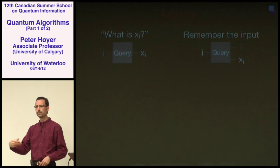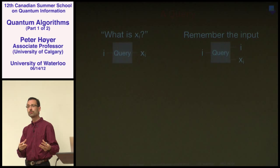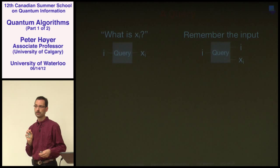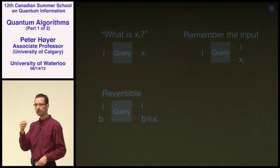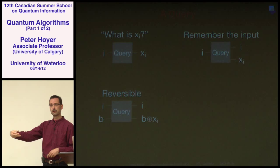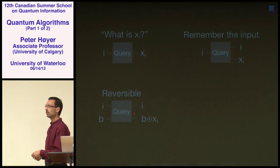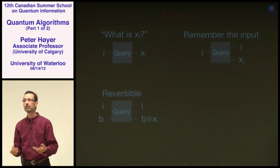We need to model this quantumly. On a quantum computer everything is unitary, so we have to keep the query around. Whenever you do a query, you get i, you query i, and you get i and the bit x_i out. It also has to be reversible — in quantum mechanics time can go forward or backward, so you cannot just learn information without being able to forget it. You need to be able to undo queries.